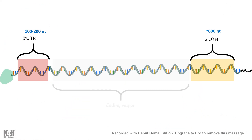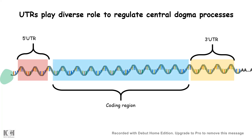Regarding sequence features, the 5' UTR and 3' UTR do not have the same length. The 5' UTR is shorter, generally 100 to 200 nucleotides, whereas the 3' UTR is typically more than 800 nucleotides. GC content also differs: the 5' UTR has about 60% GC content, while the 3' UTR has around 45%. These differences contribute to distinct regimes of translational regulation and RNA stability.